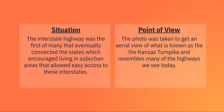The interstate highway was the first of many that eventually connected the states, which encouraged living in suburban areas that allowed easy access to these interstates. The photo was taken to get an aerial view of what is known as the Kansas Turnpike, and it resembles many of the highways we see today.